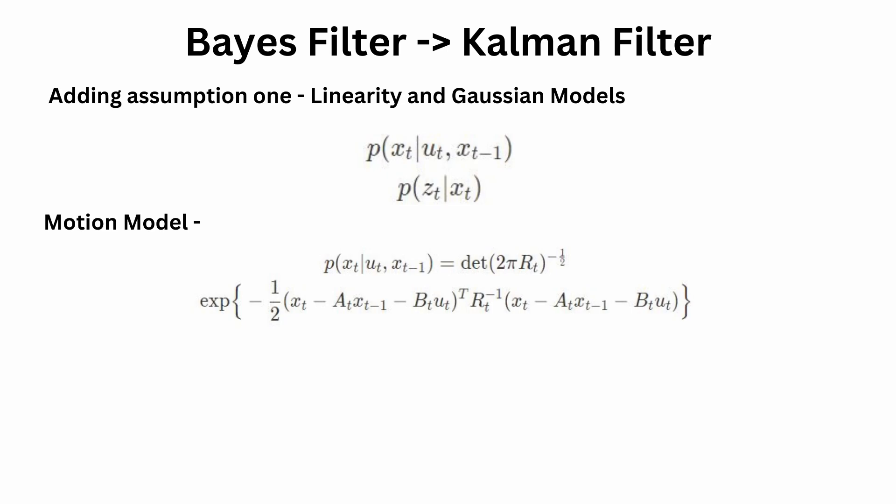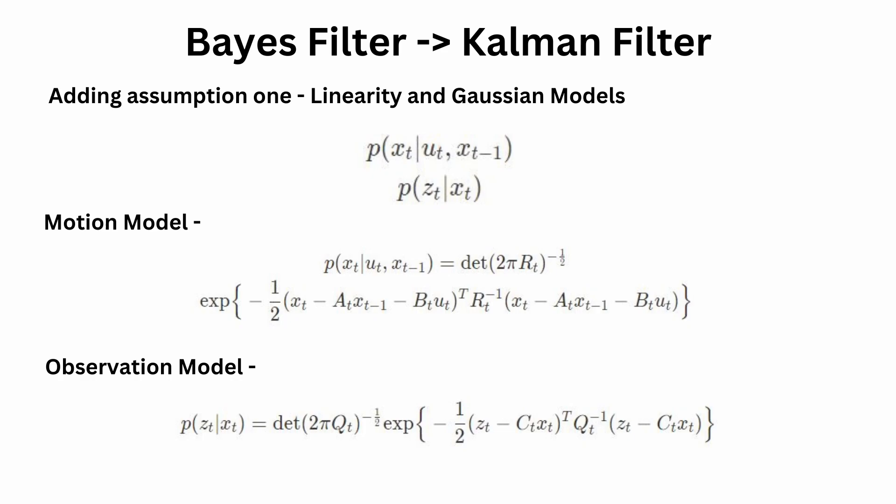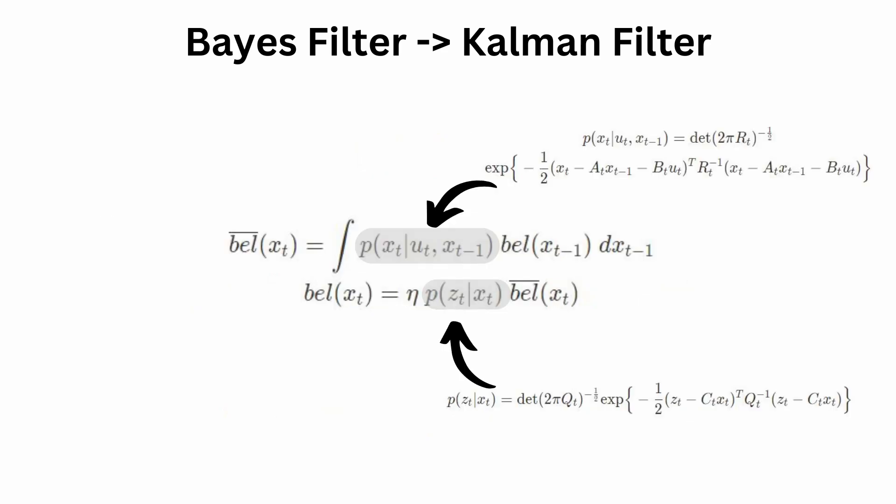Similarly, your observation model p(z_t | x_t) with the two assumptions has a mean of C(t)·x(t), and Q(t) describes the measurement noise. Now, if you substitute p(x_t | u_t, x_{t-1}) — your motion model — and p(z_t | x_t) — your measurement model — with these linear Gaussian models into the two Bayes filter equations and solve further, the equations undergo massive simplification. That's precisely because both equations combine two Gaussian distributions, and the combination of two Gaussian distributions is also Gaussian.